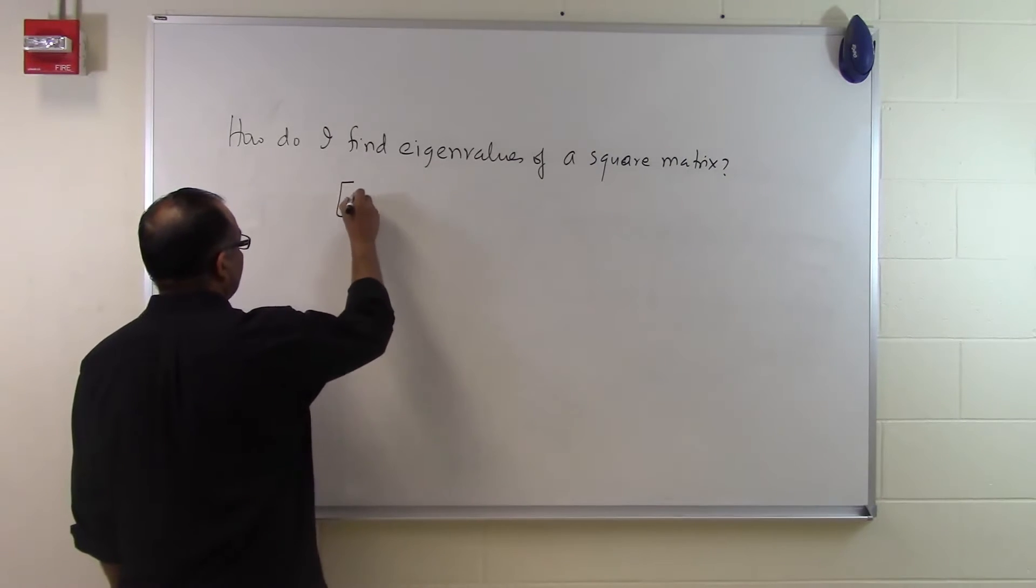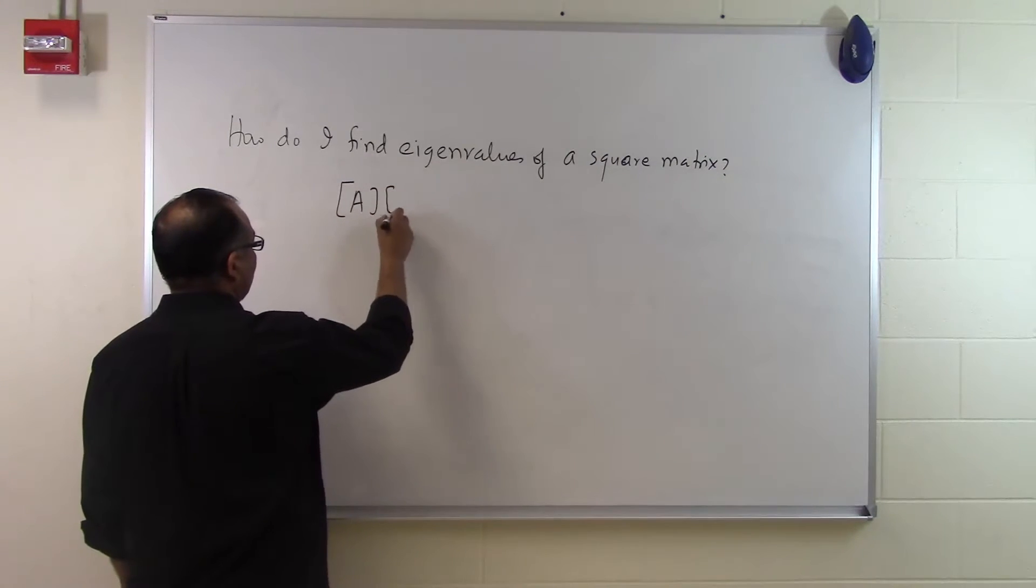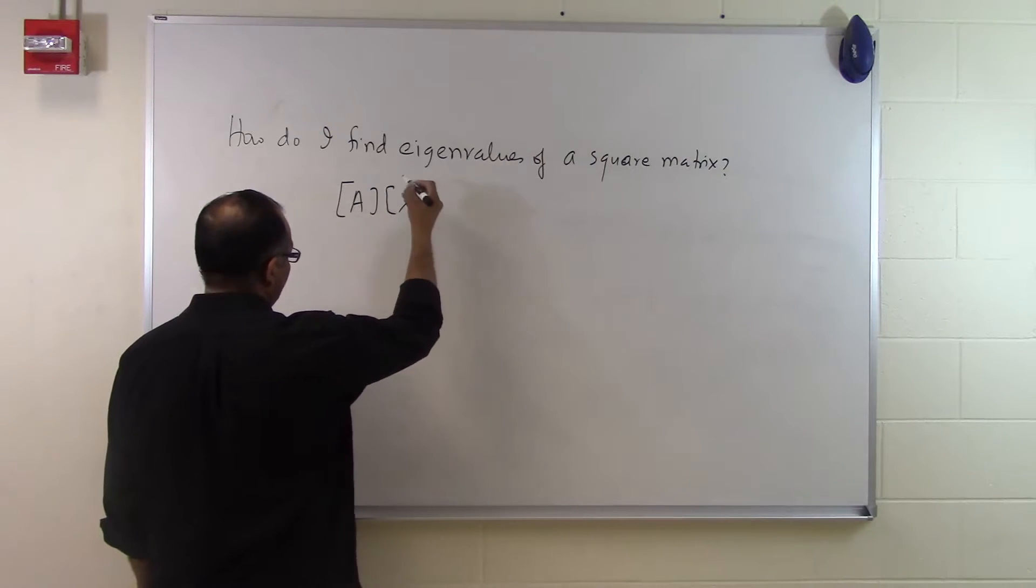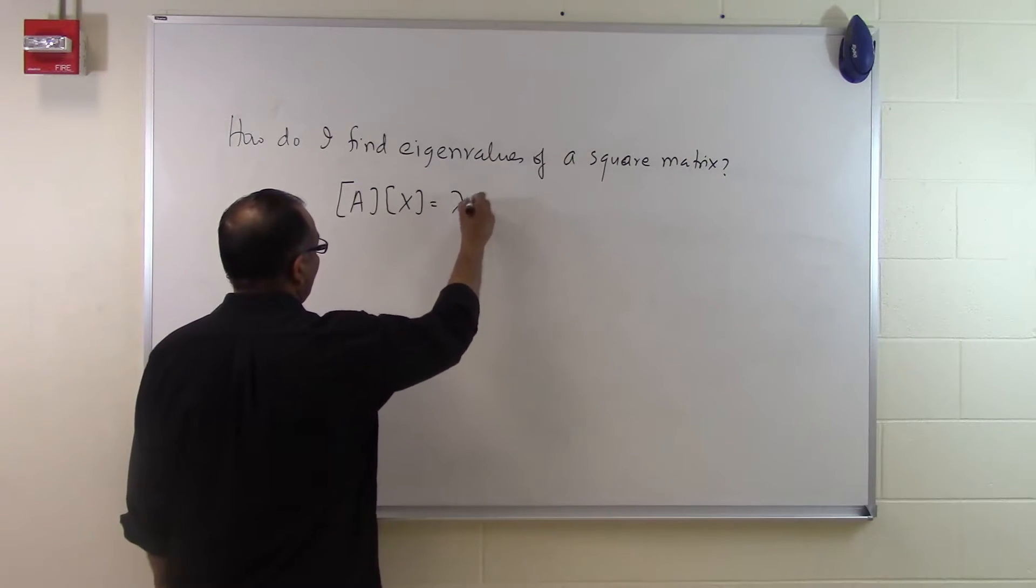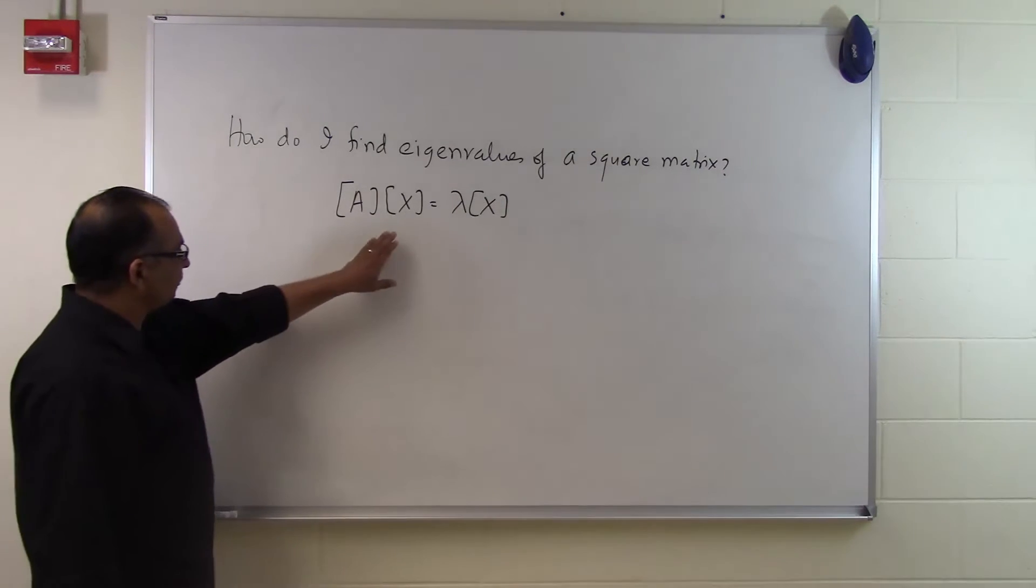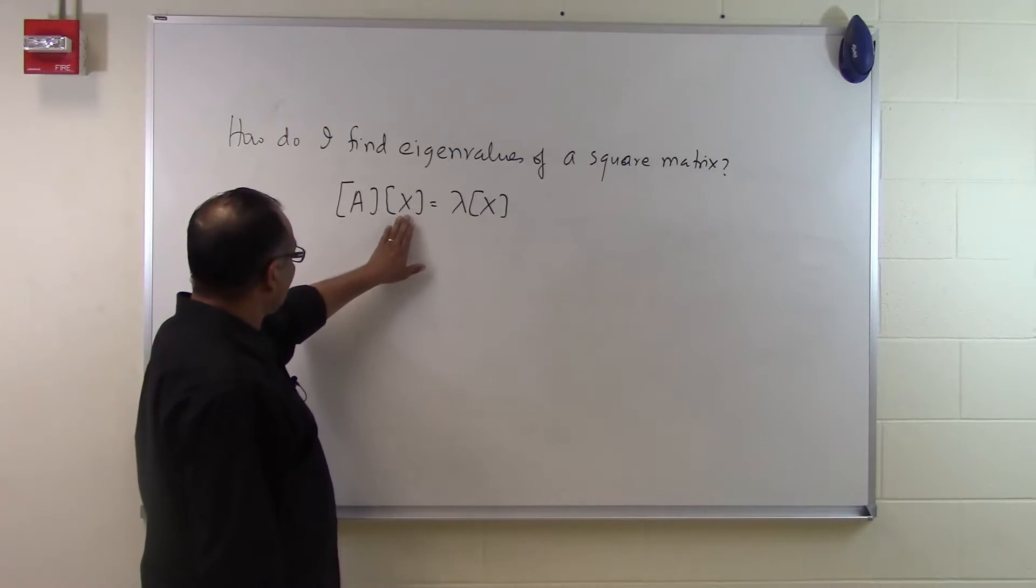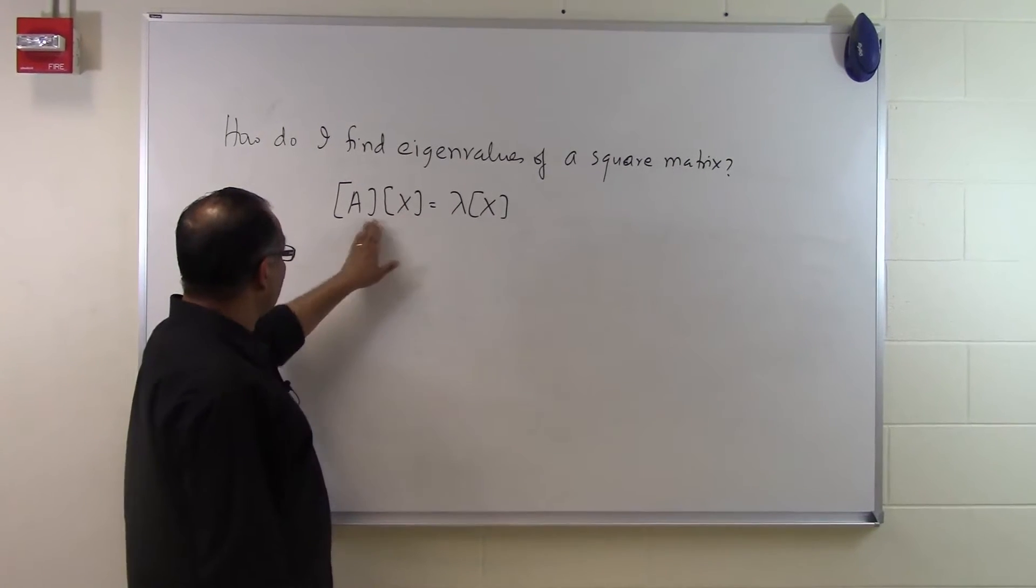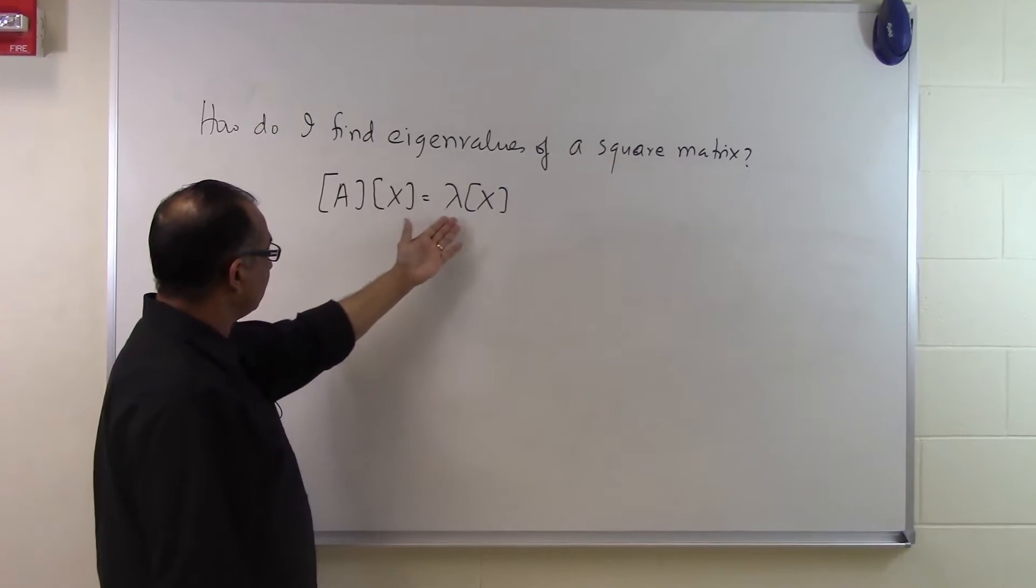If somebody is telling you that they want you to find the eigenvalue of a matrix A, then we already know that it has to satisfy this condition: there has to be some eigenvector, some column vector x, which is non-zero. Keep in mind it's non-zero, because if it's zero, it's going to be satisfied no matter what the value of lambda is.